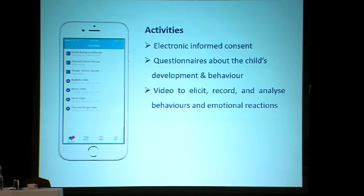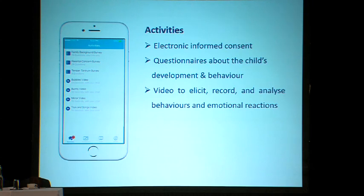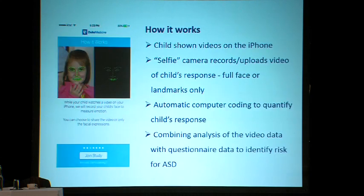Duke University conducted a population-based study where the Autism and Beyond app was available in the American Apple App Store. Parents could download it free of charge, then accessed the app using a unique username and password and completed the in-app activities. The first step is a self-guided electronic informed consent, followed by a demographic questionnaire and questionnaires about the child's development and behavior, and then the video assessment section of the app.